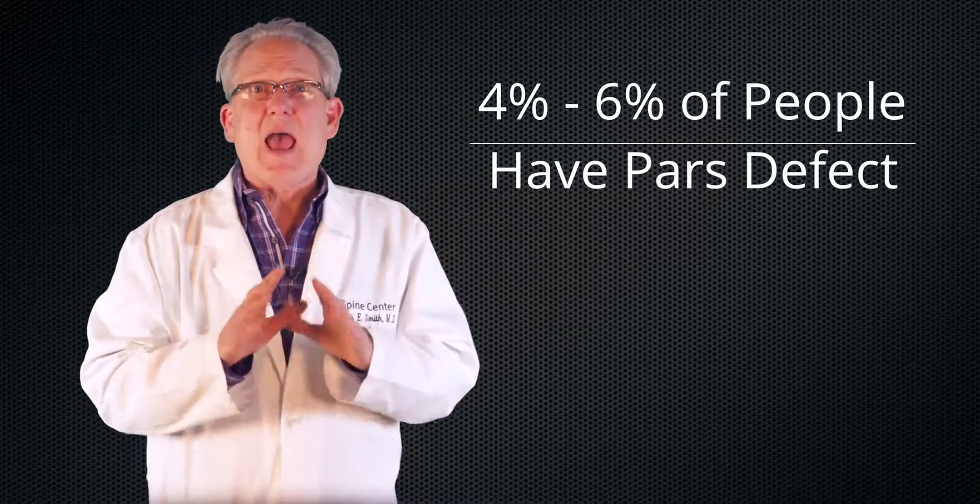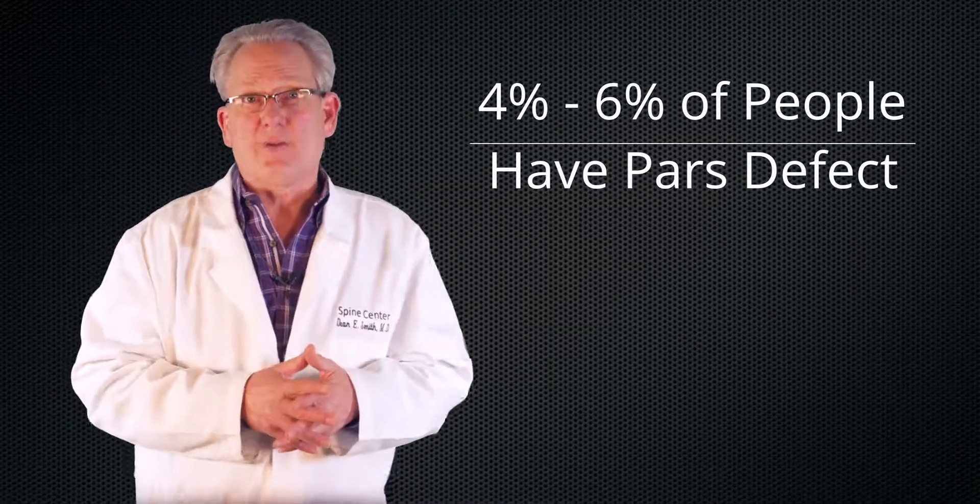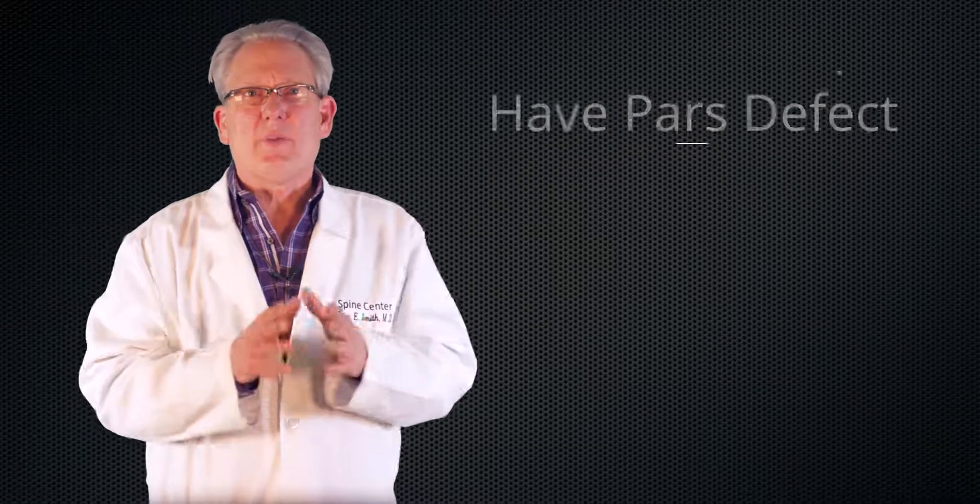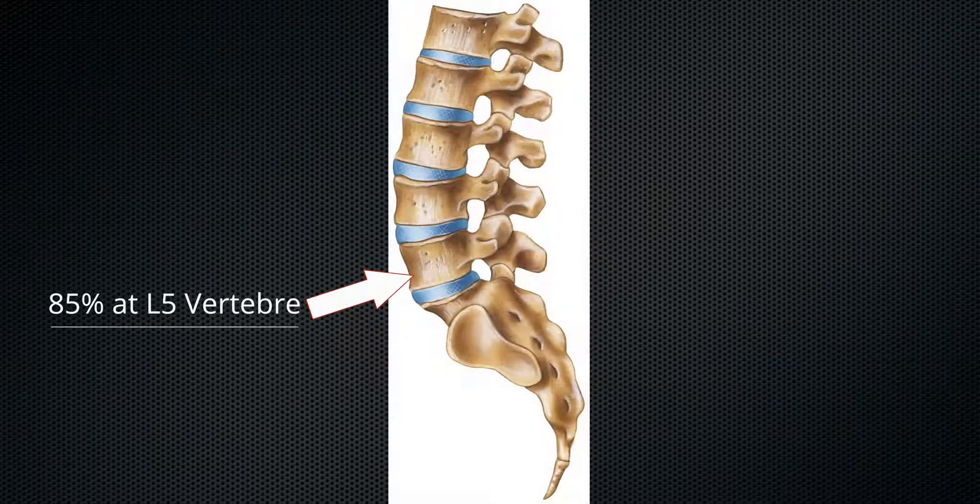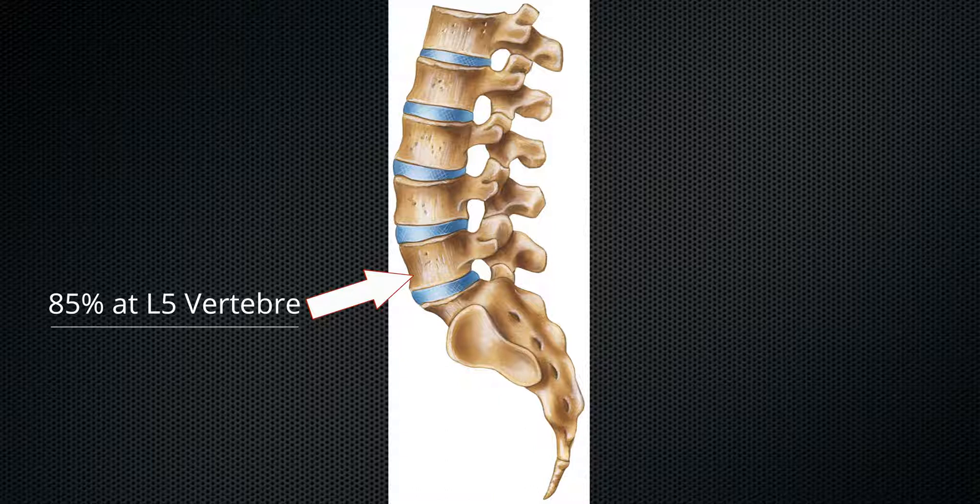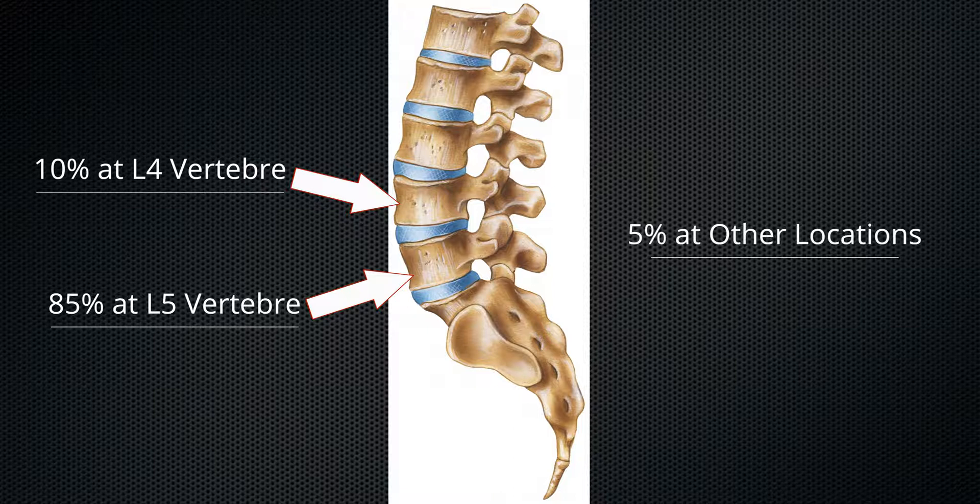In the overall population, roughly four to six percent has a defect in the pars. This is more common in people that engage in activities that place hyperextension, bending back type forces on the lower back, such as gymnasts, football linemen, and weight lifting. And it has to do with the fact that as you get lower in the back, there's more of an angle and more stress on those vertebral bodies. So 85% of these occur at L5, 10% occur at L4, and then 5% are distributed throughout the rest of the spine.